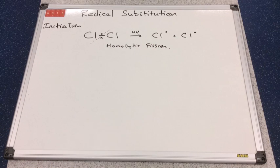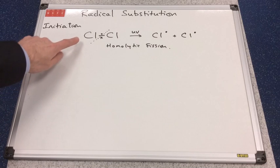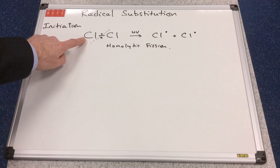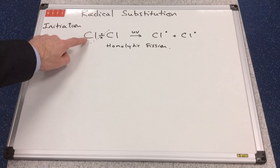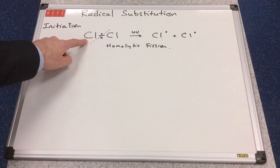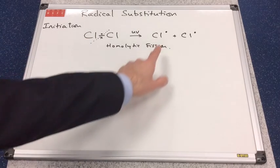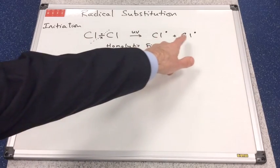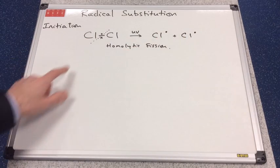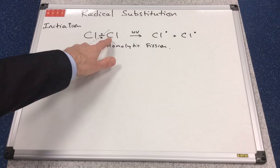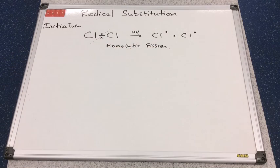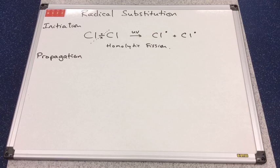It's worth noting that initiation steps involve the reaction of a stable molecule to produce two free radicals. So: initiation — stable molecule makes two free radicals.